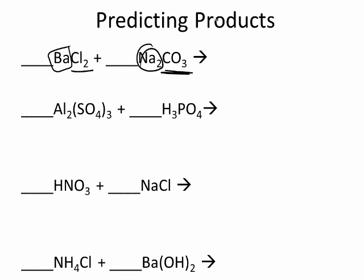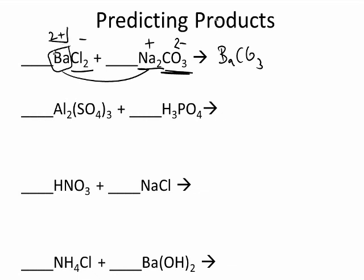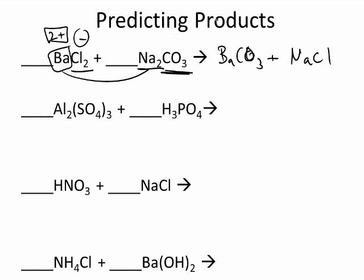Let's write the charges. Carbonate is 2−, chlorine is 1−, barium is 2+. So barium is going to switch with sodium. It's going to be barium carbonate — those are 2+ to 2−, they cancel. Then we have NaCl, and those cancel because it's a plus and a minus. We need to balance: there are 2 chlorines, so we put a 2 there, making 2 sodium. And we're done.